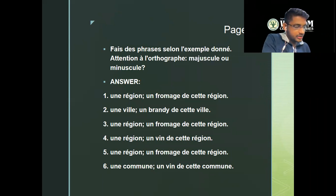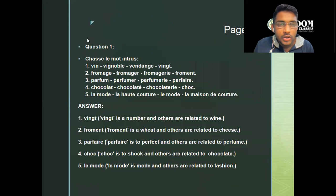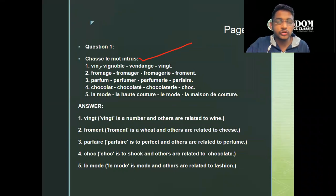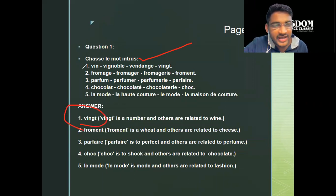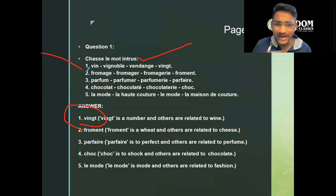Moving forward to page number eight. 'Chassez l'intrus' means 'all went out' — odd one out. I've already typed all the answers and questions. First one: 'verre' is a number — twenty — whereas everything else is related to wine. So 'verre' is the odd one out; others are related to wine.